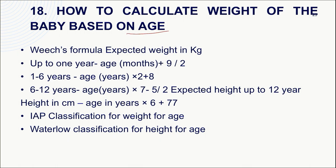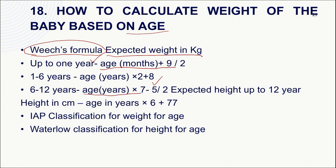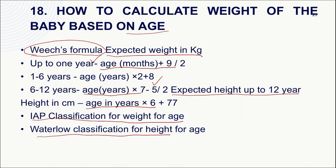To calculate expected weight and height based on age, the commonly used Weech's formula is applied. For weight: up to 1 year — (age in months + 9) ÷ 2; 1–6 years — (age in years × 2) + 8; 6–12 years — (age × 7 − 5) ÷ 2. For height up to 12 years: height (cm) = (age in years × 6) + 77. Based on these, we apply the IAP classification for weight-for-age and Waterloo classification for height-for-age to classify degree of malnutrition and stunting.